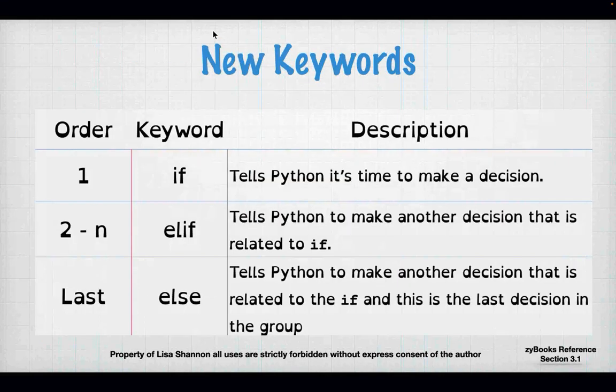This week we've got some new keywords and new concepts. We have three new keywords: if, elif, and else, and there is an order in which they have to appear. If always has to appear first — you can't have an elif or an else if there's no if statement. You don't have to have an elif or an else, but you have to have an if. If you want to make multiple related decisions, you'll use an elif. And if all else fails, you'll use an else.